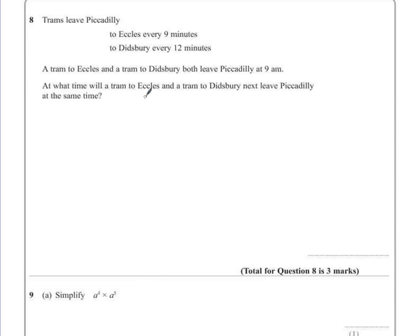This question is looking for a combination of time and what's called the lowest common multiple. We're looking for a time that both trams will leave at the same time. So the easiest way to do this is to list the times when each tram will be leaving Piccadilly.